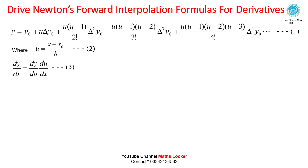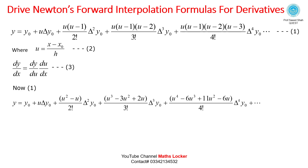We use the chain rule: dy/dx = (dy/du) × (du/dx), because y is a function of u and u is a function of x — this is equation number 3. From equation 1, y = y₀ + u·delta y₀ + (u²-u)/(2!) · delta² y₀ + ... Differentiating with respect to u, we get dy/du.